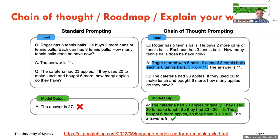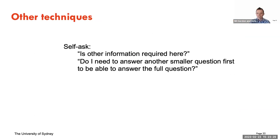By showing the working and then reaching the final answer, the model will then copy that approach for the question you want answered — and it will get the correct answer. This doesn't always work, but it improves accuracy by roughly 20%. A final technique is to get the model to ask itself whether there's other information required, or whether it needs to answer smaller sub-questions along the way — that works quite well too.